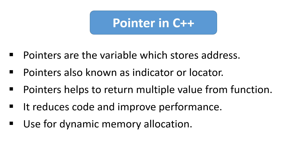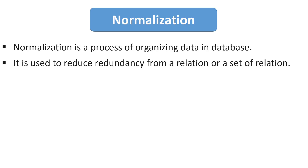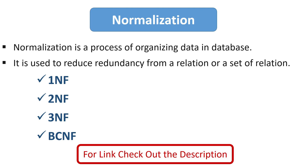Our next question is: what is normalization and its types? This question is from database management systems. Normalization is a process of organizing the data in a database, and it is used to reduce the duplicacy of data from a relation or set of relations. There are four major types of normal form: 1NF, 2NF, 3NF, and BCNF. You should give a brief definition of all four types. A detailed video on normalization is available with the link in the description box.